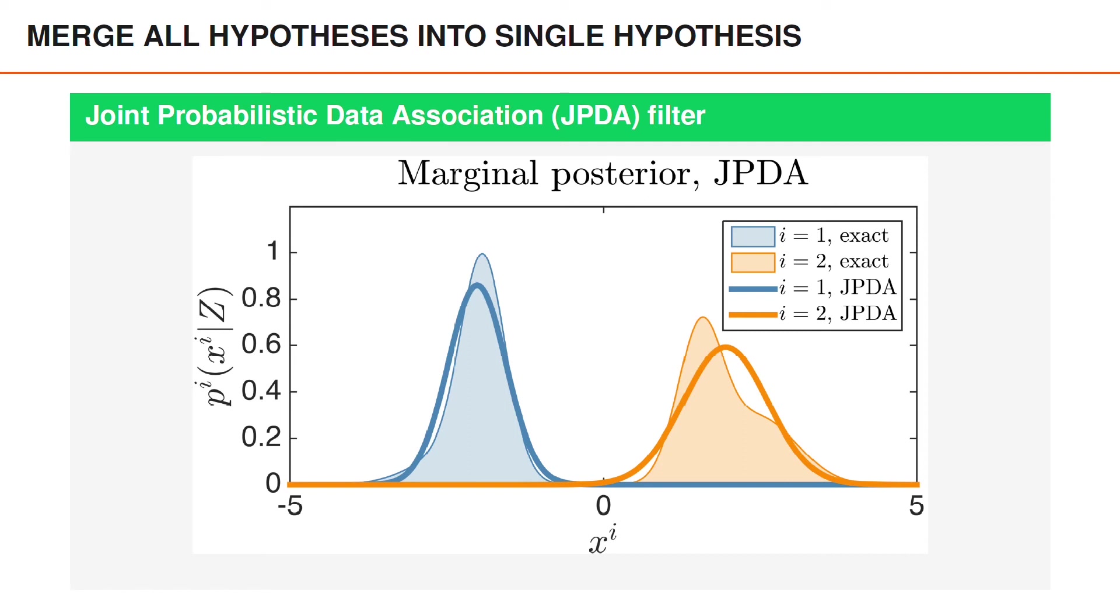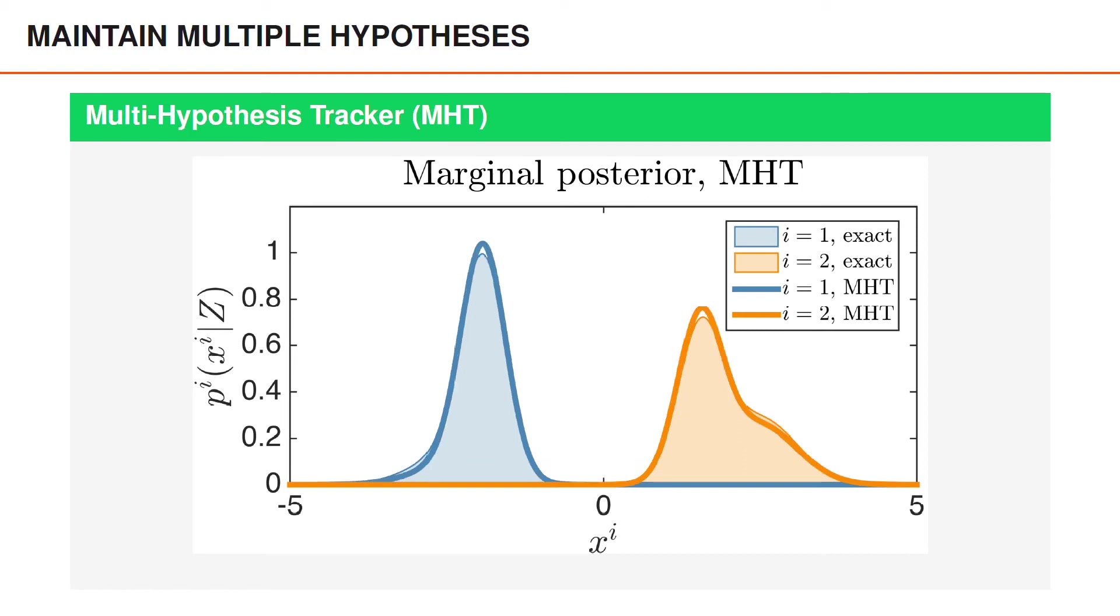We can maintain multiple hypotheses, which is what MHT does. And then we can get the approximation shown here, which, out of the three we have just looked at, is clearly most similar to the exact marginal posteriors. There's some difference, but the shape of the posterior is captured quite well.